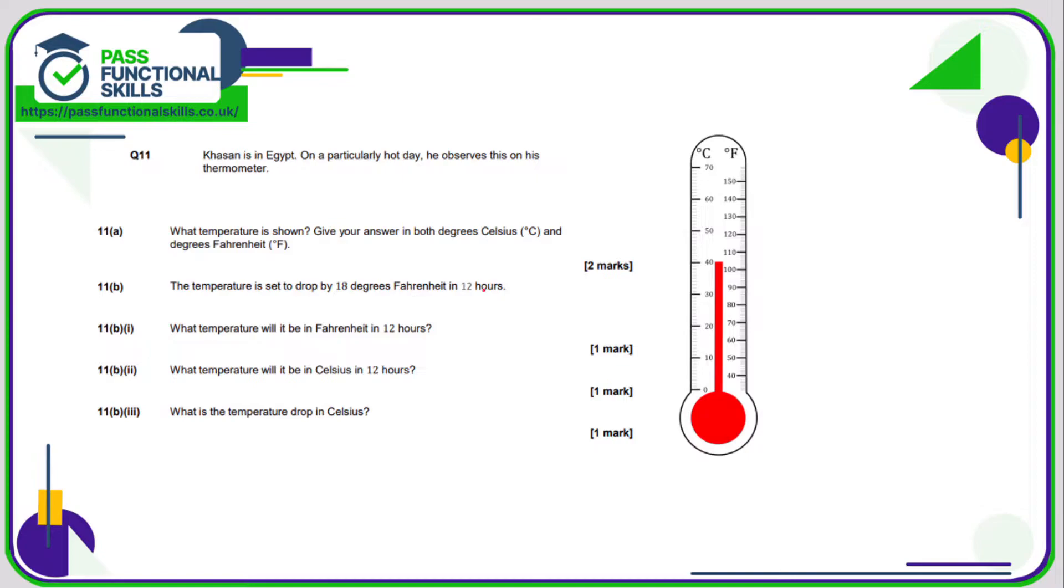So what temperature is shown in Celsius and Fahrenheit? That's 40 degrees Celsius. And that is 100, really hard to say, but I'm just going to go with halfway between 100 and 110, which is 105 degrees Fahrenheit. The temperature is set to drop by 18 degrees Fahrenheit in 12 hours. So if I subtract 18 from 105, that comes to 87 degrees Fahrenheit.